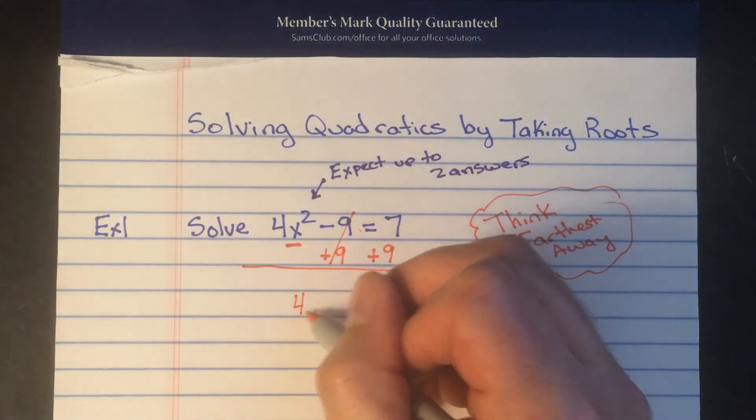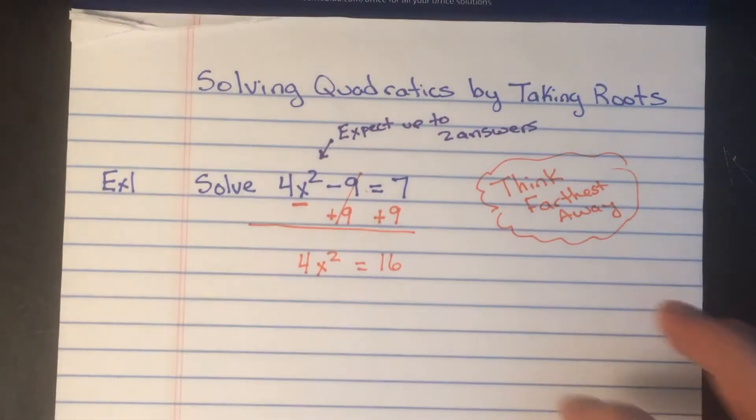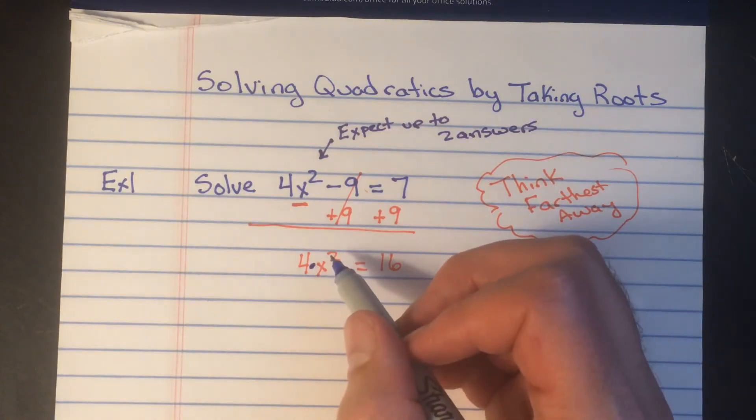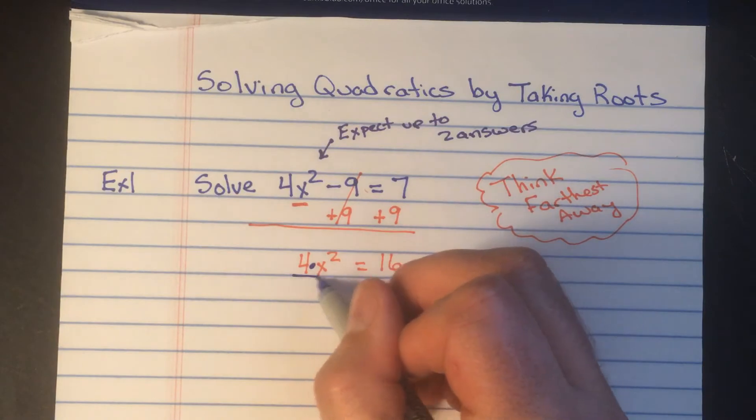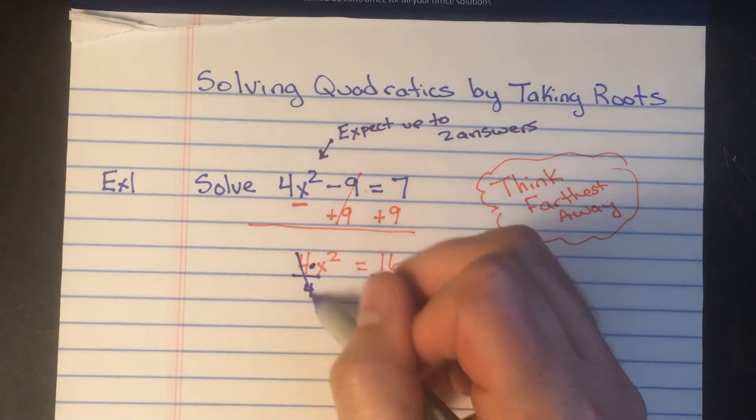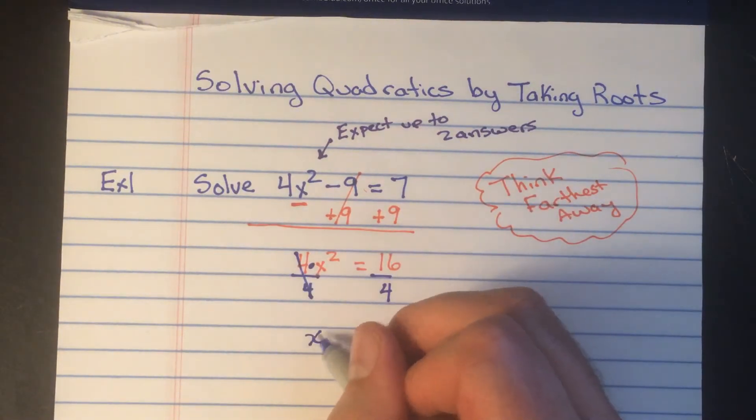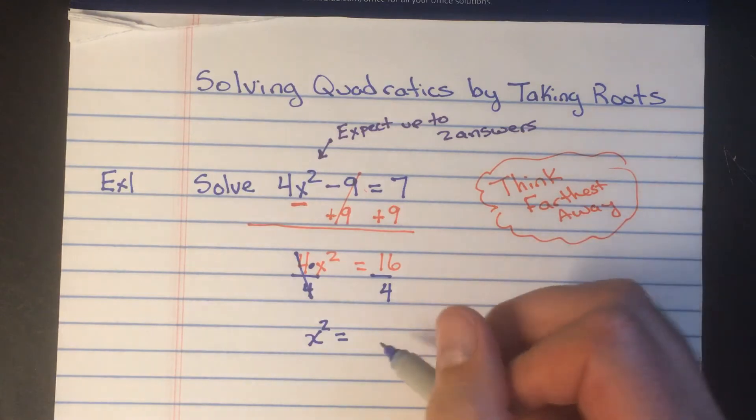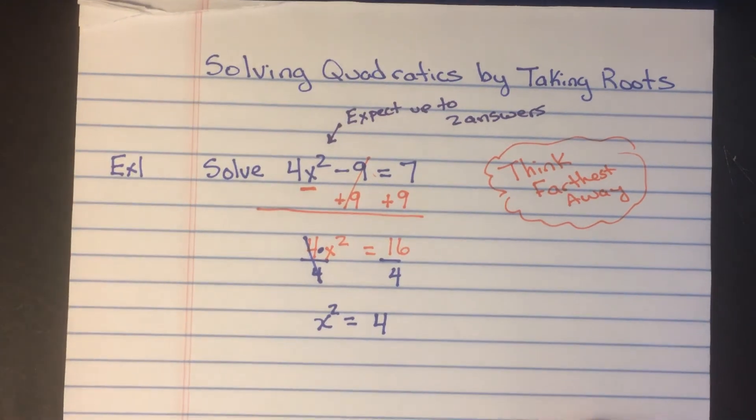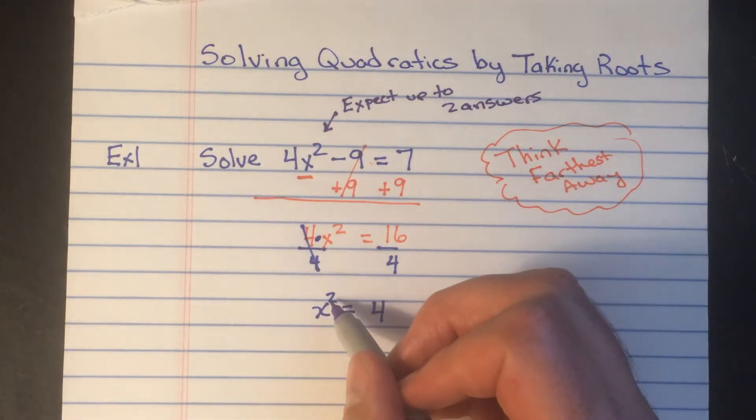Now we're just gonna keep working our way down trying to get x by itself. Now farther away from the x is not the squared but the times four. Squared is probably closest to the x at this point. And so to get rid of a times four we're gonna divide by four. So we're gonna take both sides, divide it by four. Four divided by four is one. One times x squared is just x squared so we ignore it. And 16 divided by four is four. Now at this point some students might want to stop. It kind of looks like x is by itself, but there's one more thing that we have to get rid of to get x by itself and that's the squared.